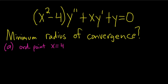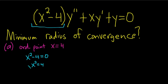First you have to find what's called the singular points for this differential equation. To do that, you simply take this piece here and set it equal to 0. You can solve this by adding 4 and then taking the square root on both sides, and we get plus or minus 2. These are the singular points.